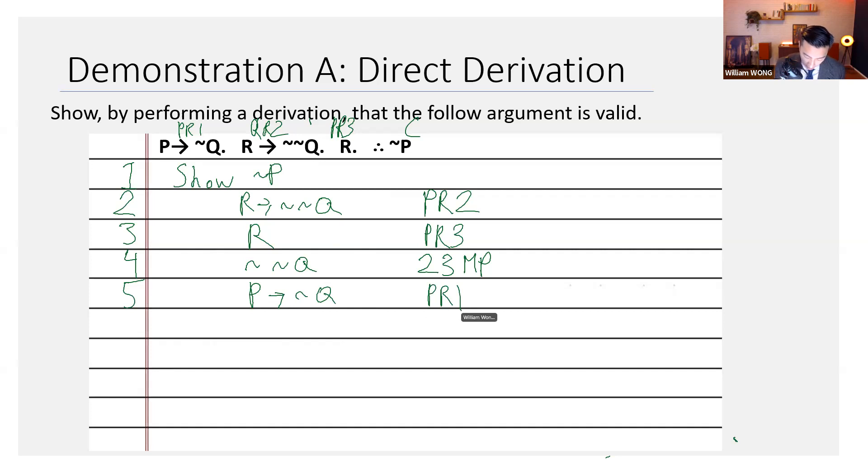Well, we can see that line four and five can be used to give us something. It can be used to give us not P by way of modus tollens. So four, five, MT.